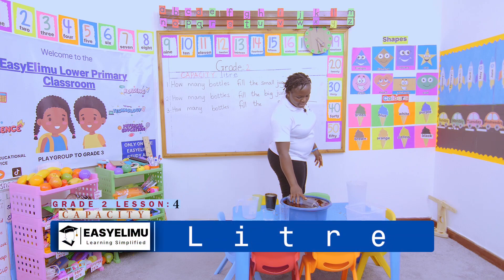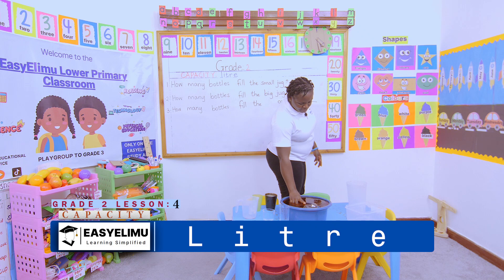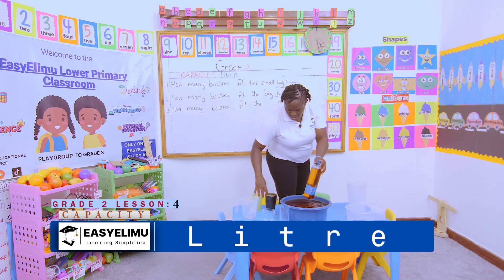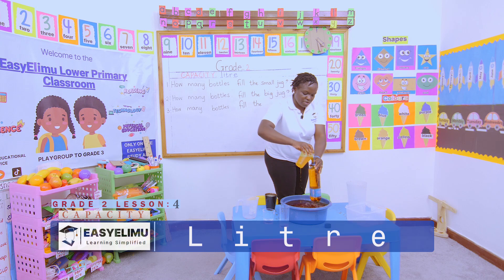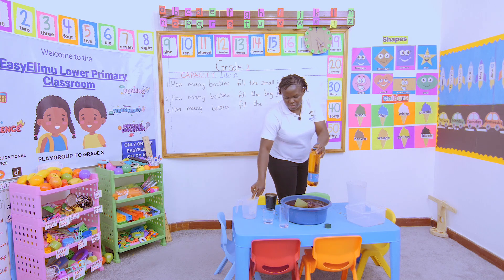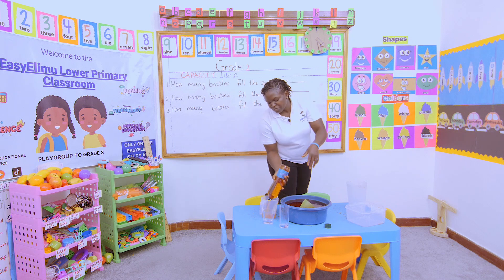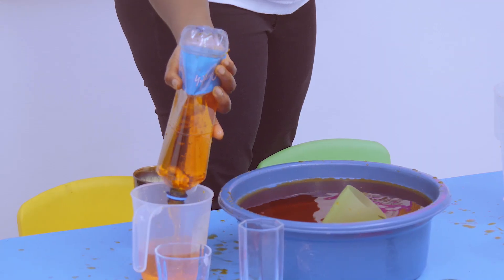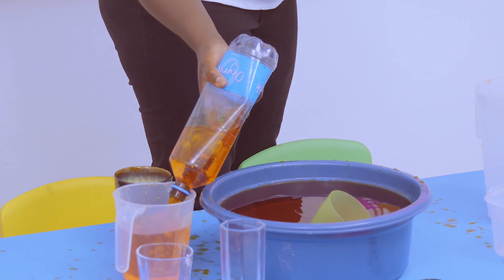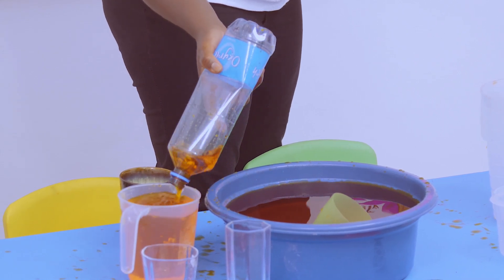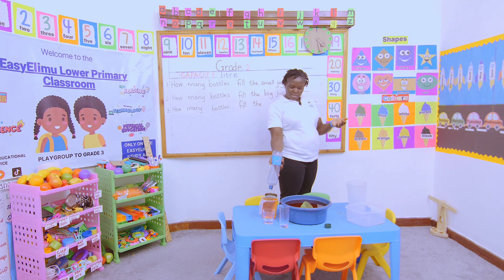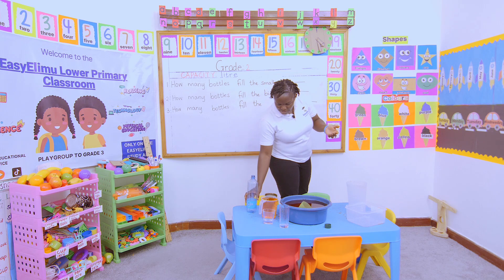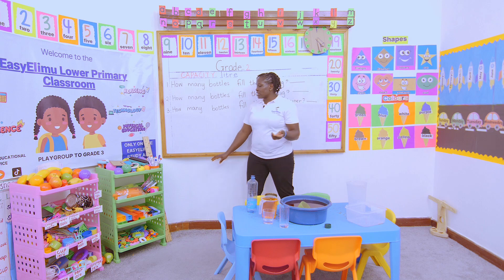Let's see. How many bottles will fill this small jug? So this is one liter of water. Let's see how many of them fill the jug. So we have realized that this bottle fills the jug, which means the small jug is how many liters? The small jug is one liter.